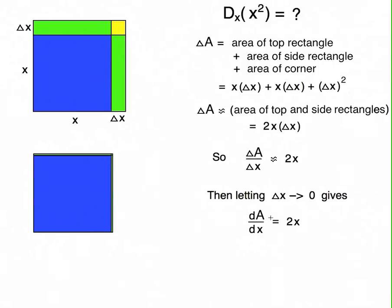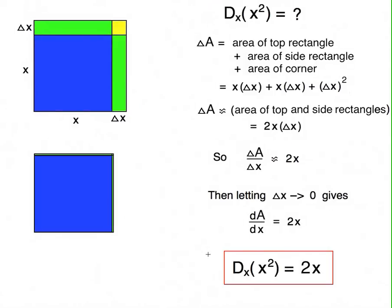2x is not affected by delta x. The wavy equals sign becomes an equals sign because, as we've already said, the closer delta x gets to zero, the better this approximation is. And that's what we were looking for. A was just x squared, the area of the square. So finally, we get the answer to the question we originally posed, namely, that the derivative of x squared is 2x.